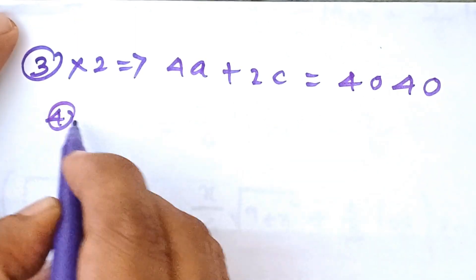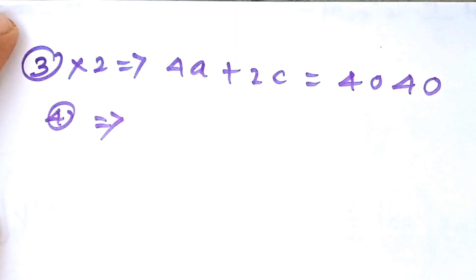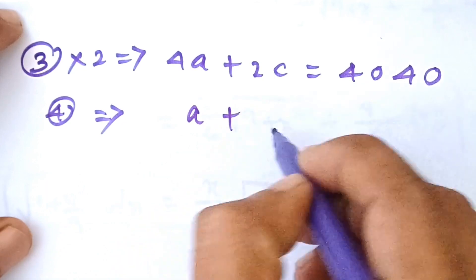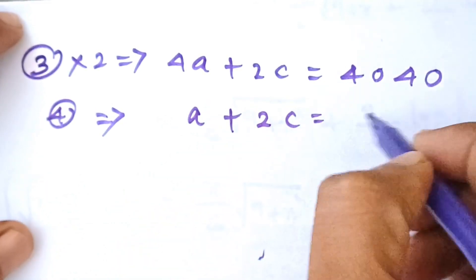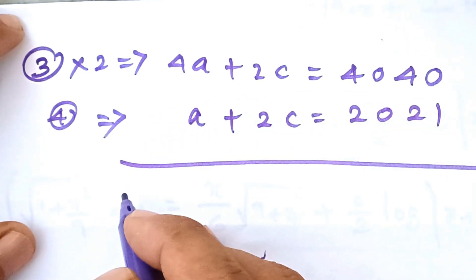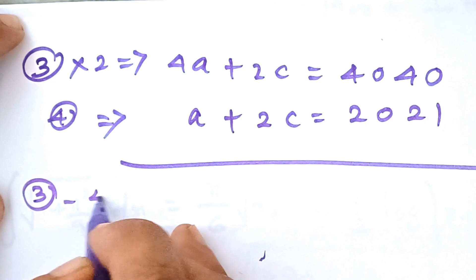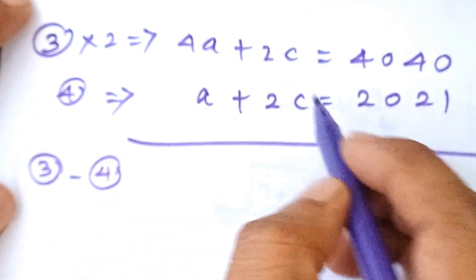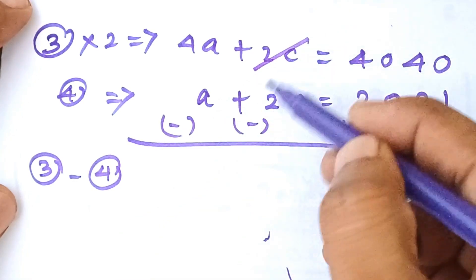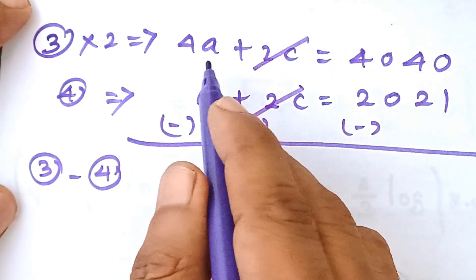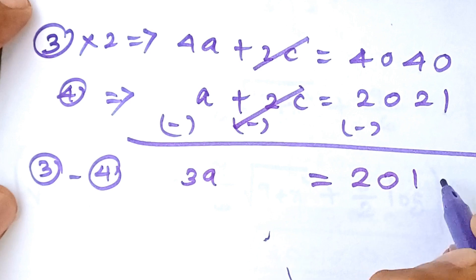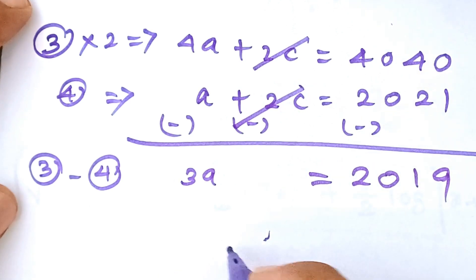To eliminate the variable C, multiply equation 3 by 2, giving 4A plus 2C equals 4040. Equation 4 is A plus 2C equals 2021. Subtracting equation 4 from the multiplied equation 3: the 2C terms cancel, and 4A minus A gives 3A. The right side is 4040 minus 2021 equals 2019. We want to find the value of A, so A equals 2019 divided by 3.